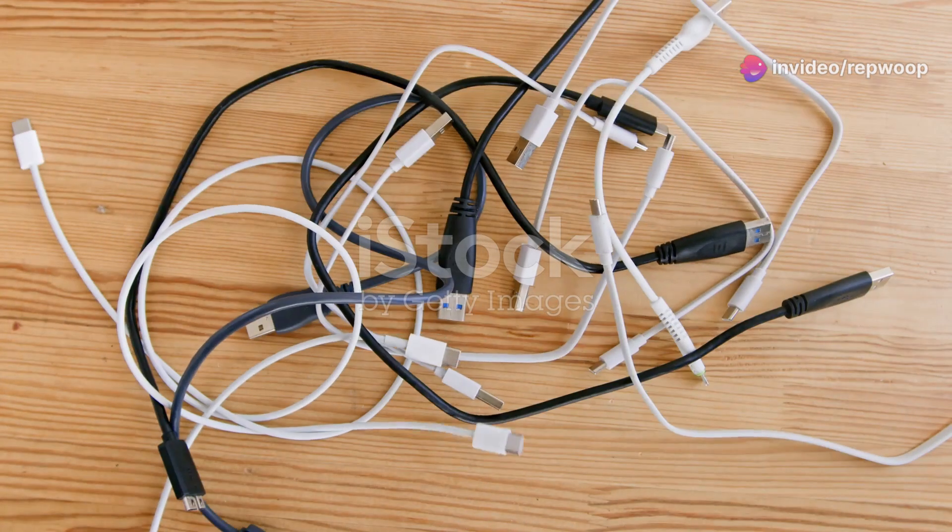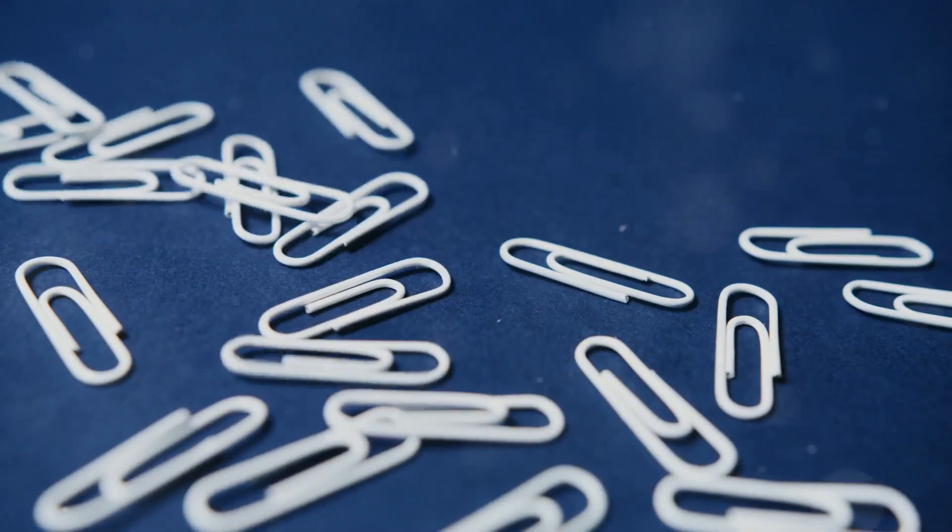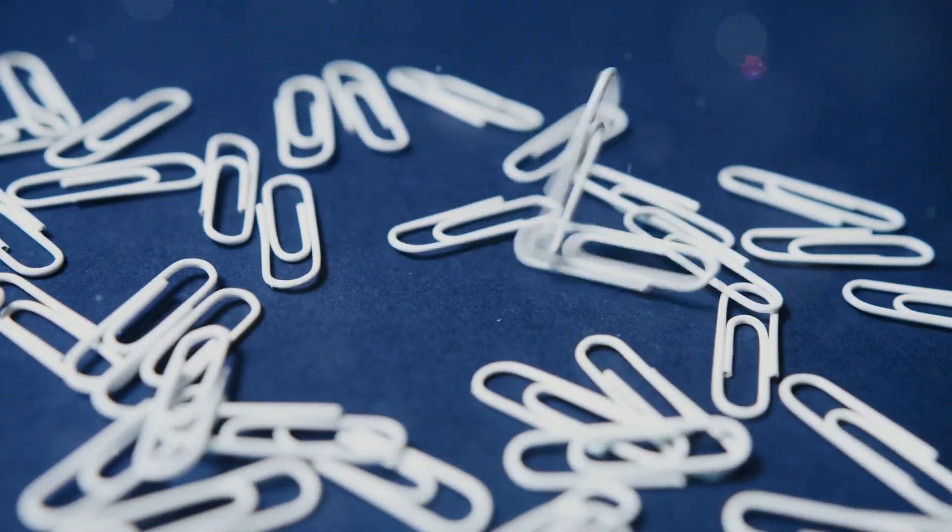First up, say goodbye to messy cords. Grab some binder clips and attach them to the edge of your desk. Slip each cord through the metal loops. Voila, instant organization.